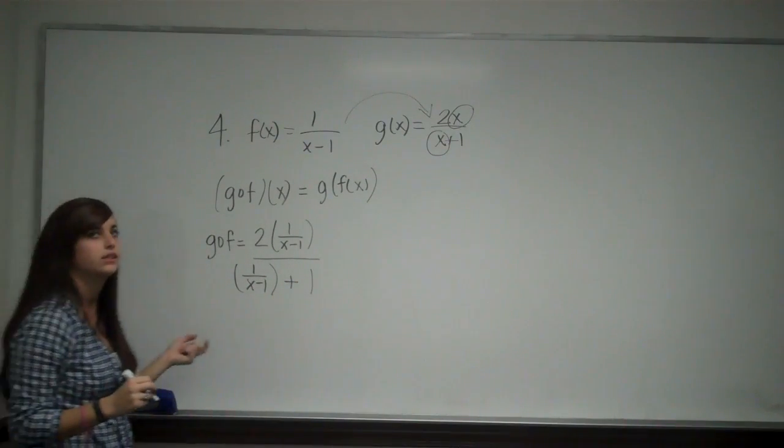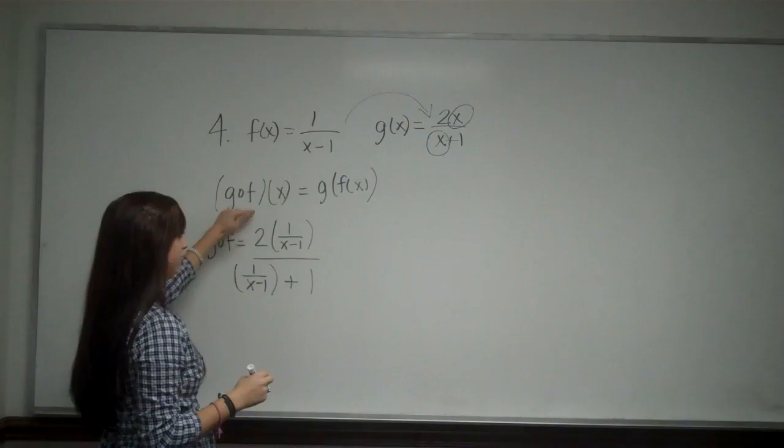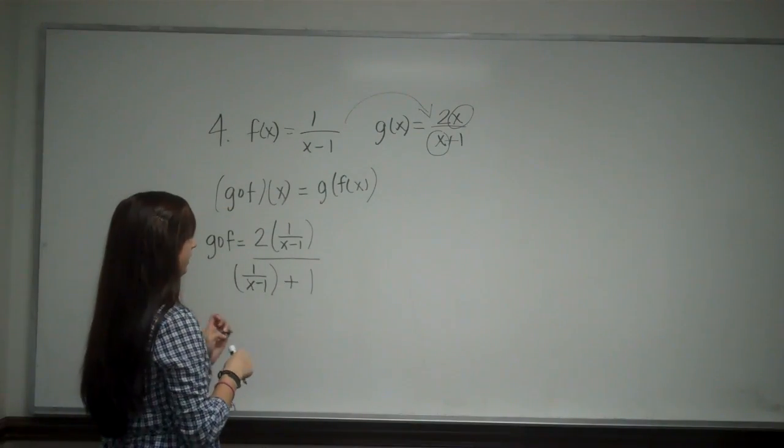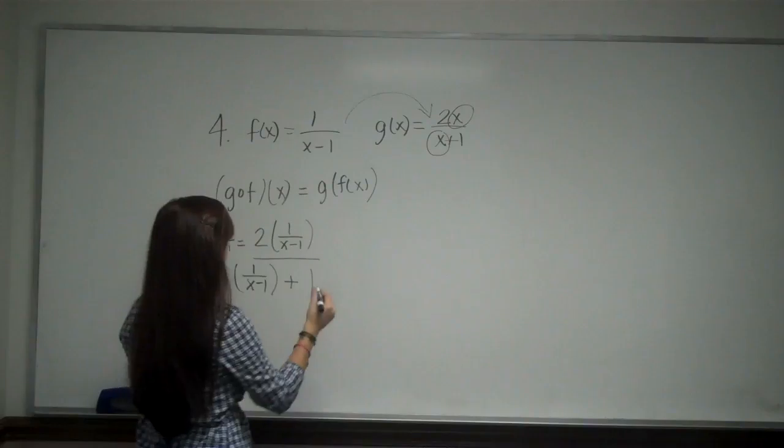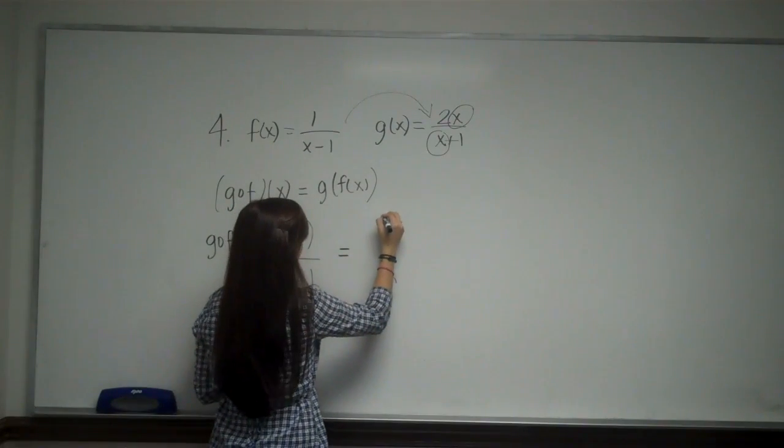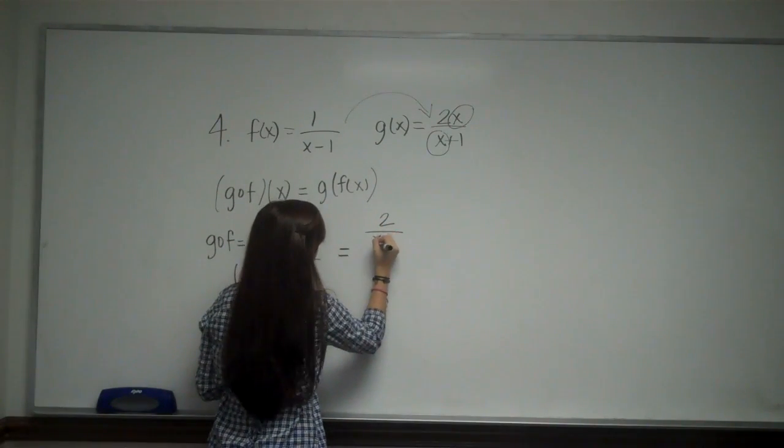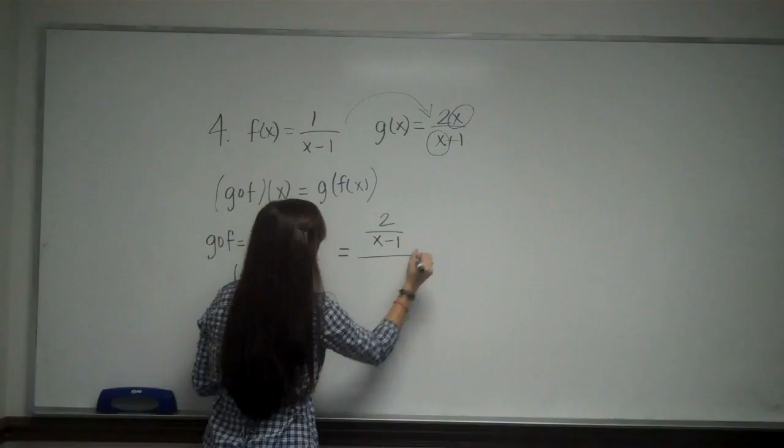This looks a little intimidating at first, but we're just going to take the numerator and the denominator separately and we'll be good. So for the numerator, I can distribute my 2. So this is going to be 2 over x minus 1, and this is all we divide.